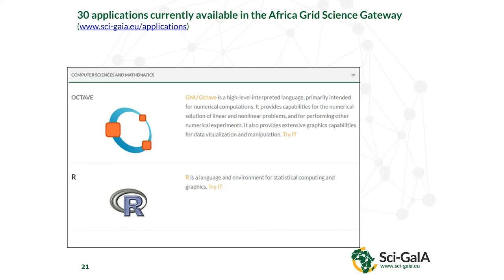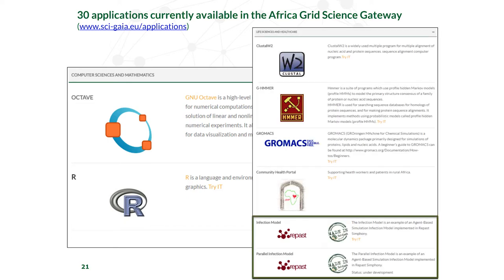We have 30 applications currently available in the Africa Grid Science Gateway. We have general purpose applications like Octave — an open source clone of MATLAB — and R, which is a de facto standard in statistical analysis. We also have more discipline-oriented applications for life sciences: ClustalW, GROMACS, the Community Health Portal, and REPAS — a general purpose system for agent-based simulations. In a recent training Hackfest in Ethiopia, we managed to include two computational chemistry applications: Gaussian and Quantum ESPRESSO.